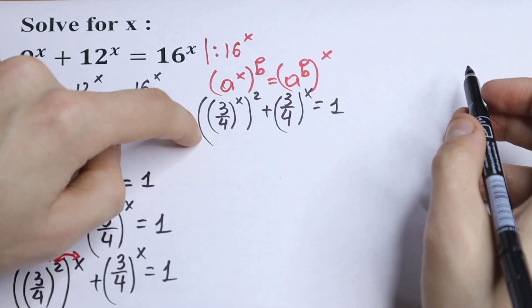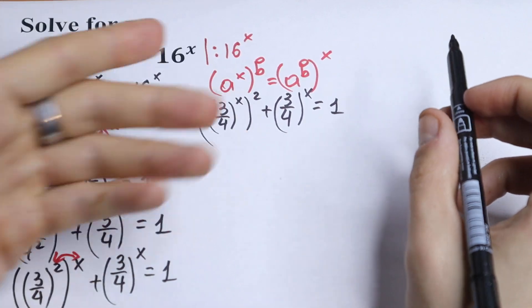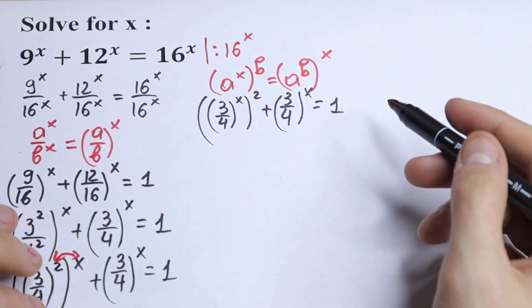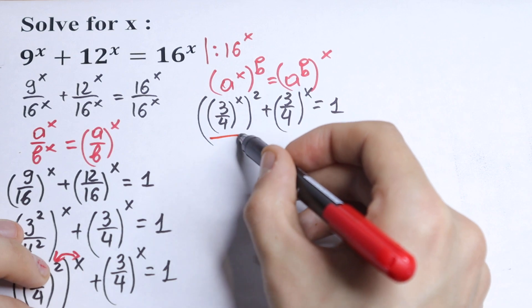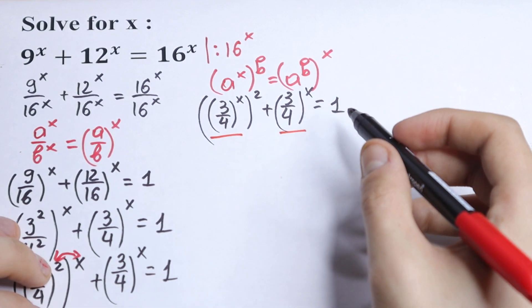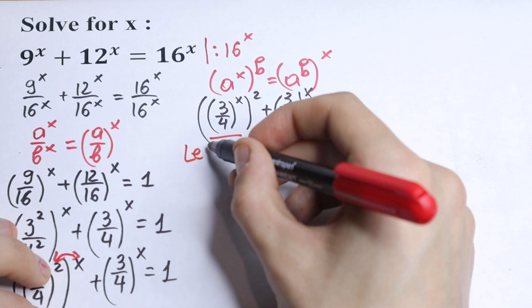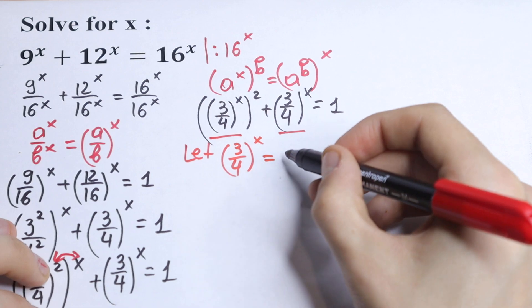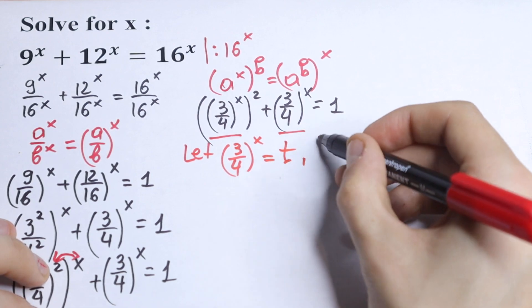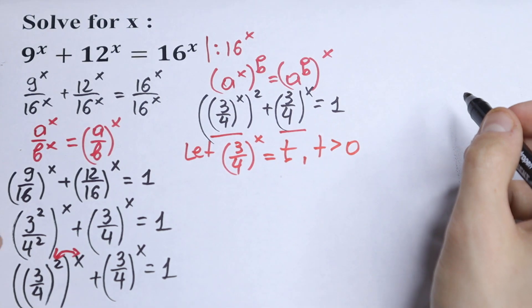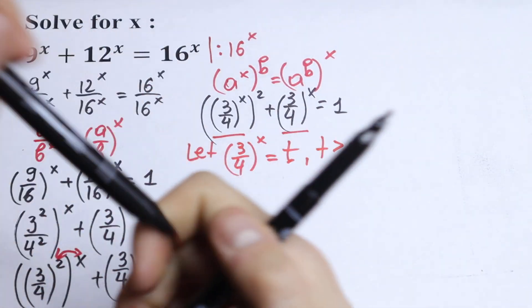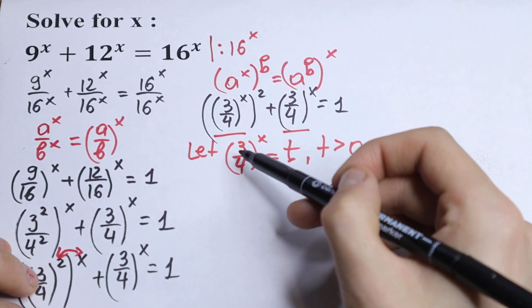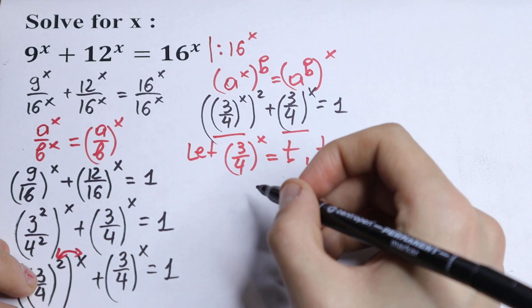This is a quadratic equation in 3 over 4 to the power x. We use the substitution: let 3 over 4 to the power x equal t, where t is greater than 0, because we are dealing with an exponential function. So we have our substitution ready.